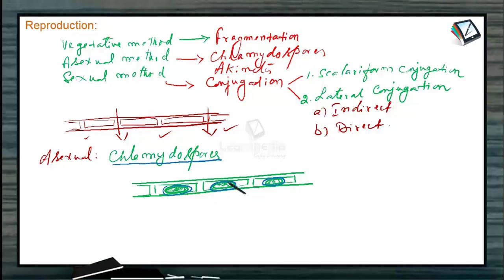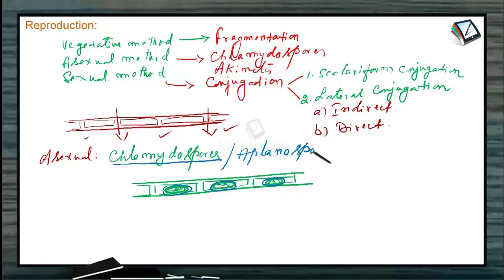These chlamydospores in Spirogyra are produced during unfavorable conditions, and naturally, when they do not have flagella, they can also be called aplanospores.